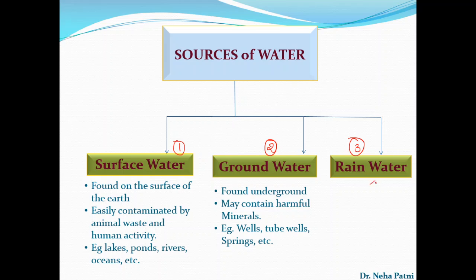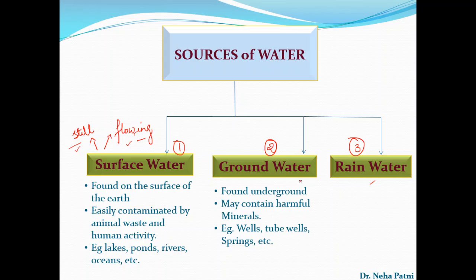Rain water is almost the purified form of water. For surface water, you need to see whether it is still water or flowing water. Flowing sources include rivers, streams, and the sea. Still sources include ponds, lakes, and reservoirs. Once you identify whether the sample is from a still or flowing source, you can predict which kind of impurity could possibly be present. For ground water, examples include springs, wells, and tube wells, and you treat it accordingly.